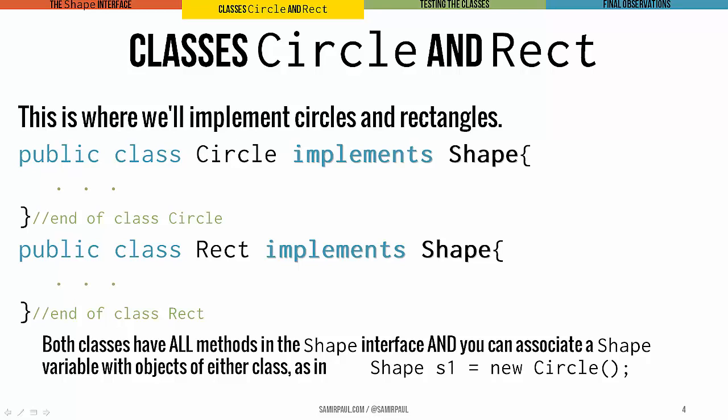We'll implement the circles and rectangles in classes that we'll call Circle and Rect. We don't use rectangle because Java already has a class with that name. The general outline looks like this: public class Circle implements Shape. That means the class Circle is going to adhere to the shape interface, and same for the class Rect.